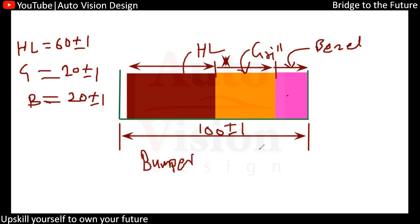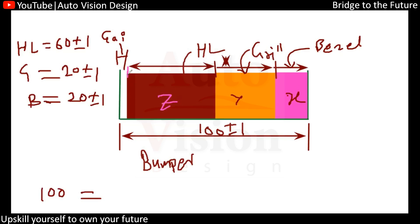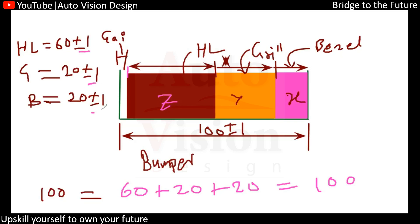The bumper is also having some plus or minus 1 mm. So now when we calculate this gap, the gap value is nothing but the total distance we have — 100 mm — and this x plus y plus z will equal this total distance. So x is 20, plus 20, plus 60, which counts to be 100. But you can find there is a plus or minus 1 that's going to be added, so 60 might be 59 or 61.